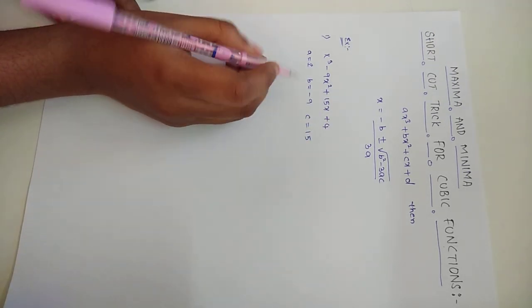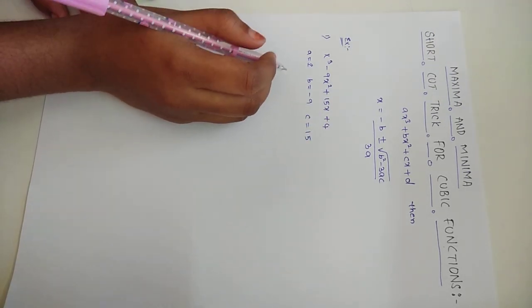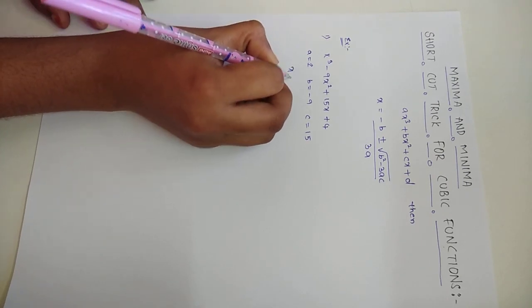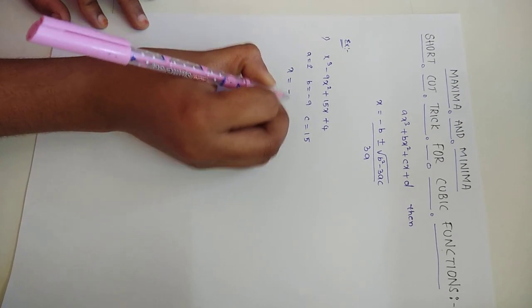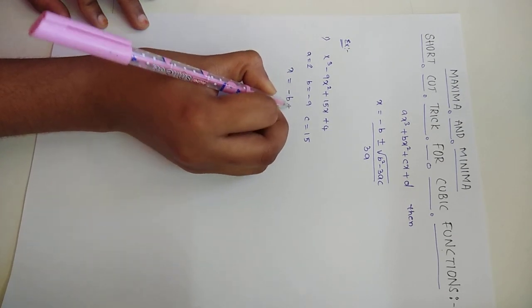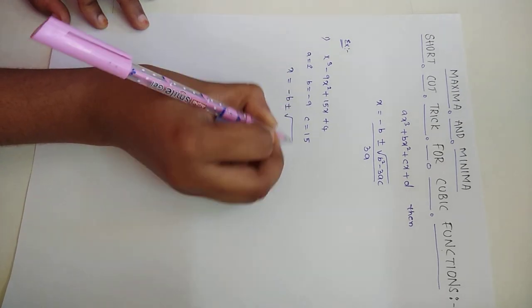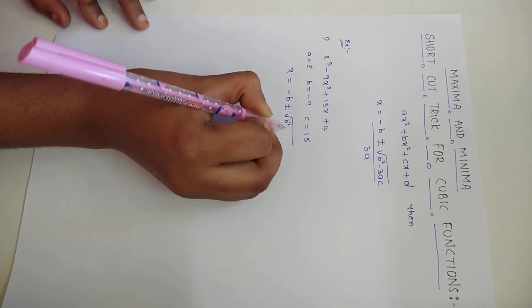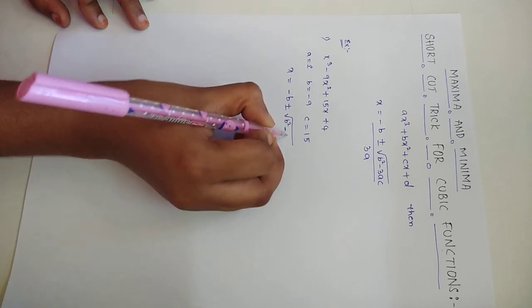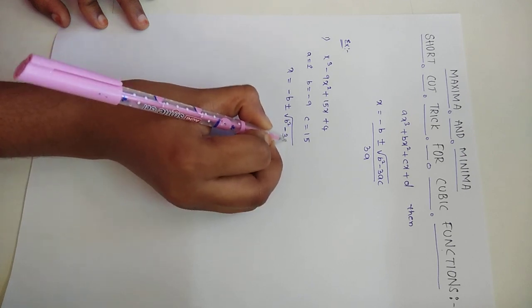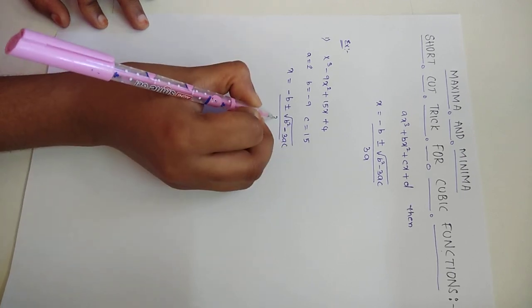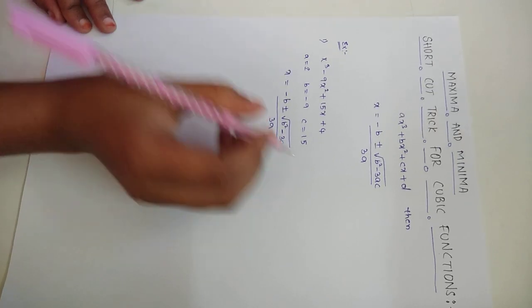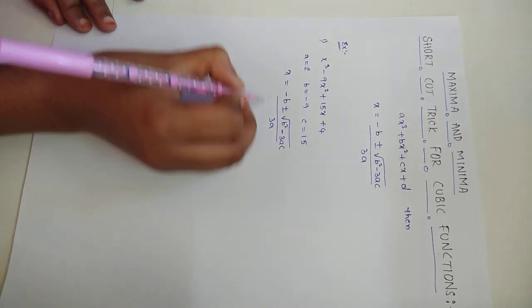Our formula is: x = [−b ± √(b² − 3ac)] / 3a. Now I am going to substitute the terms.